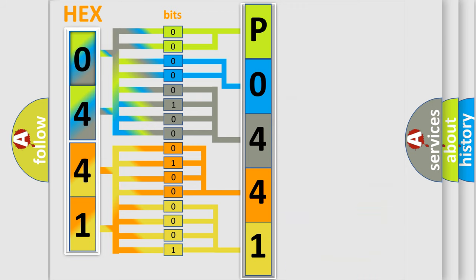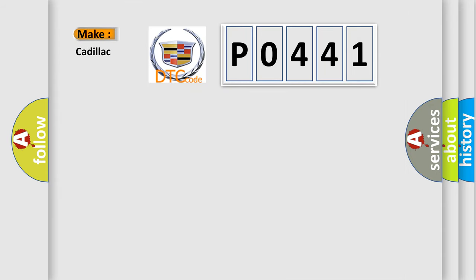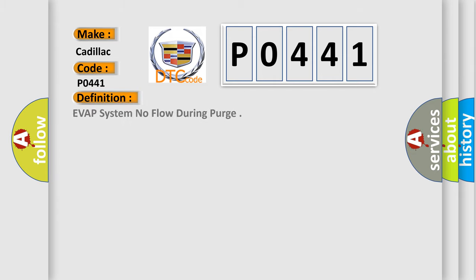We now know how the diagnostic tool translates the received information into a more comprehensible format. The number itself does not make sense to us if we cannot assign information about what it actually expresses. So, what does the diagnostic trouble code P0441 interpret specifically for Cadillac car manufacturers?